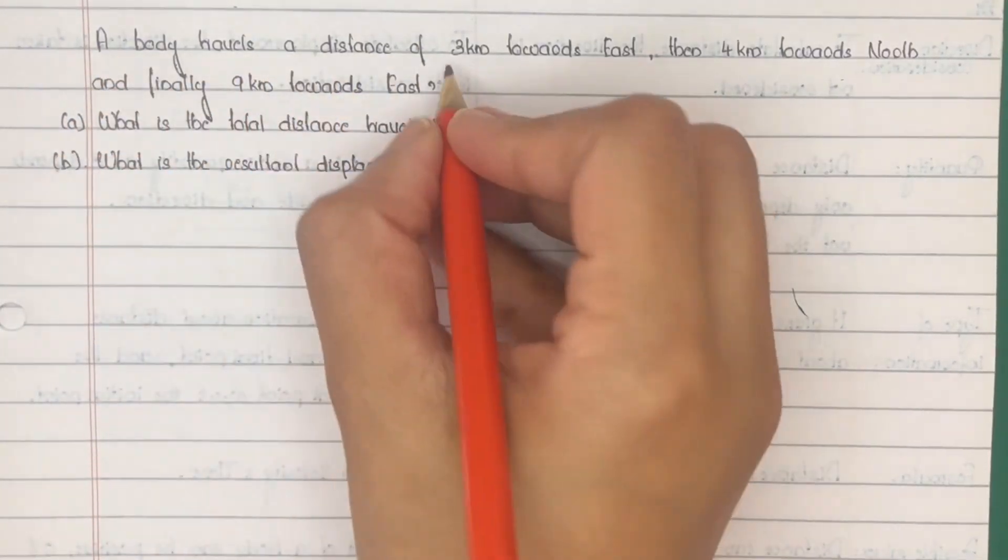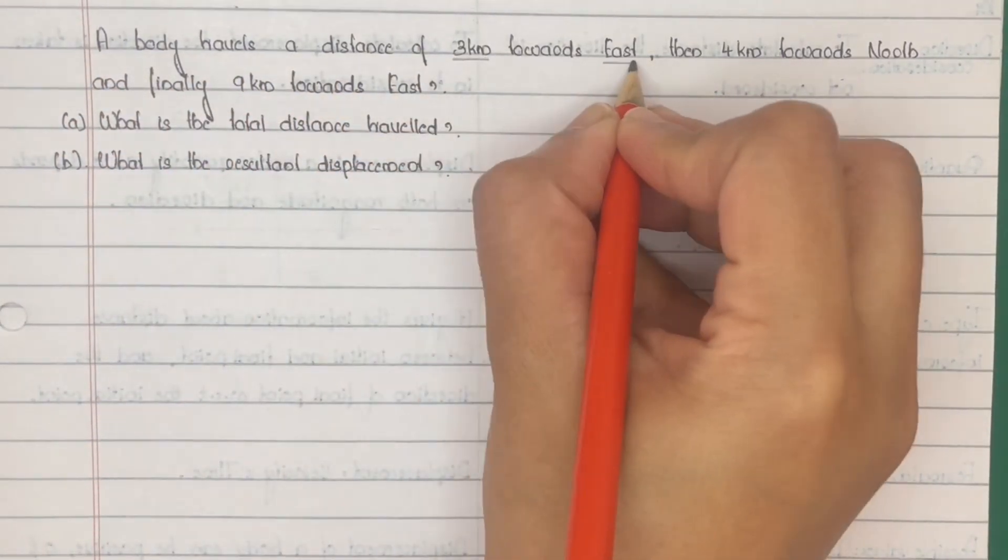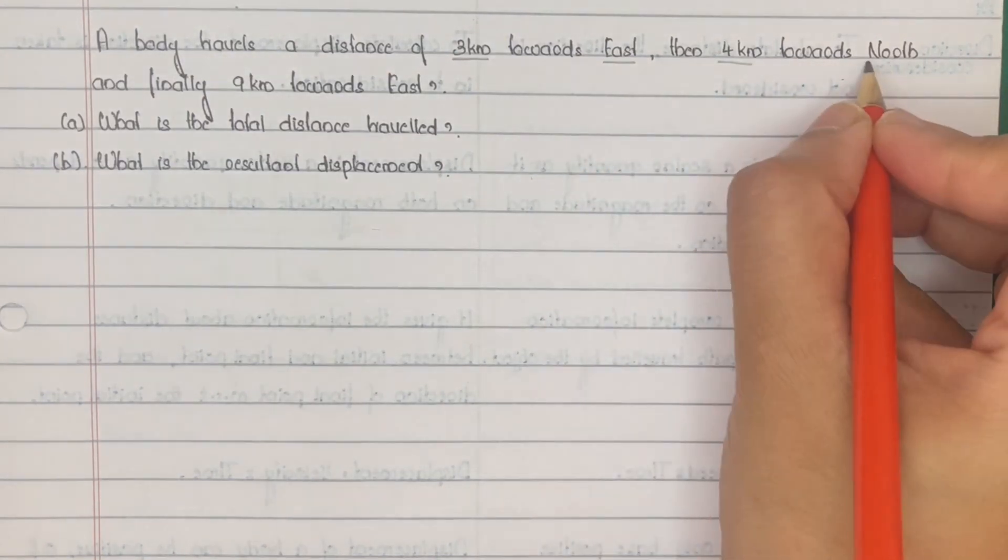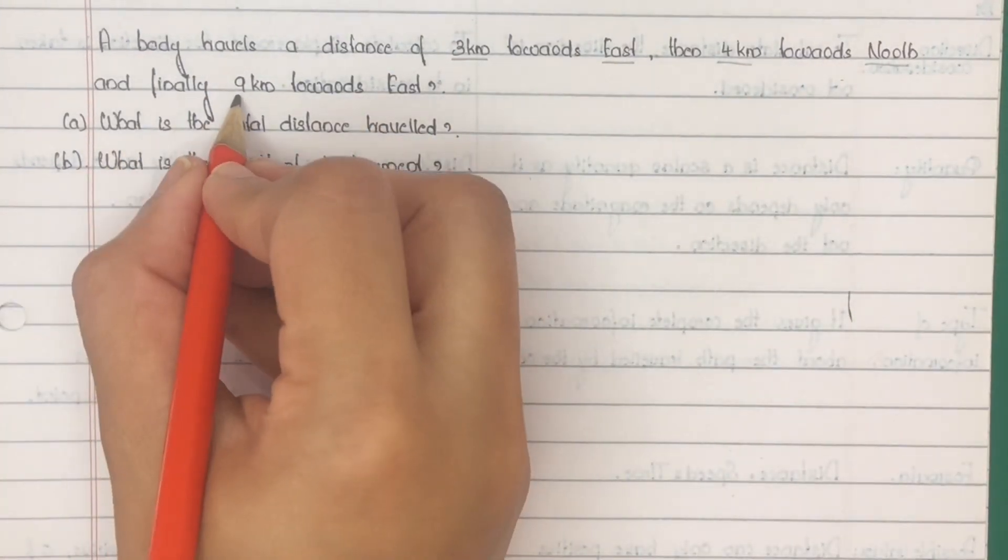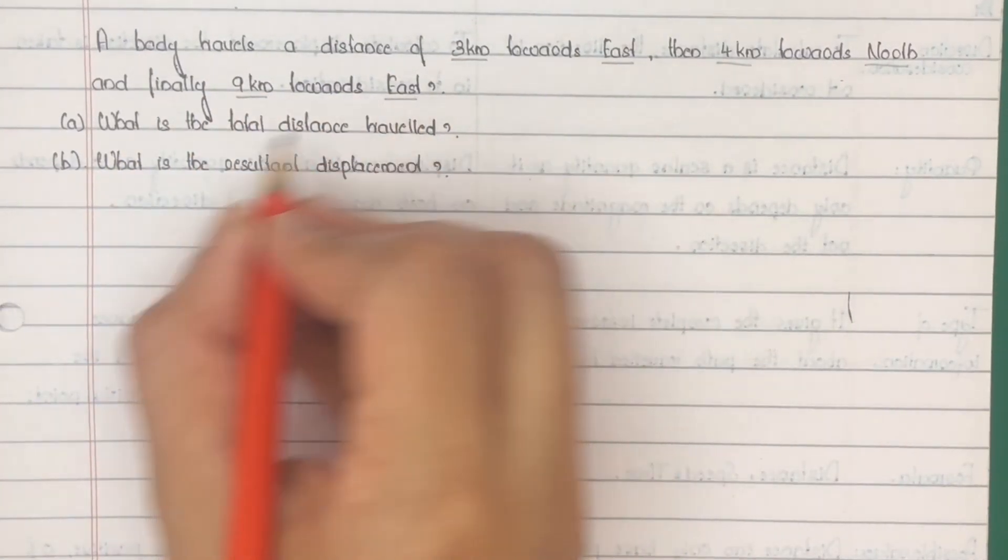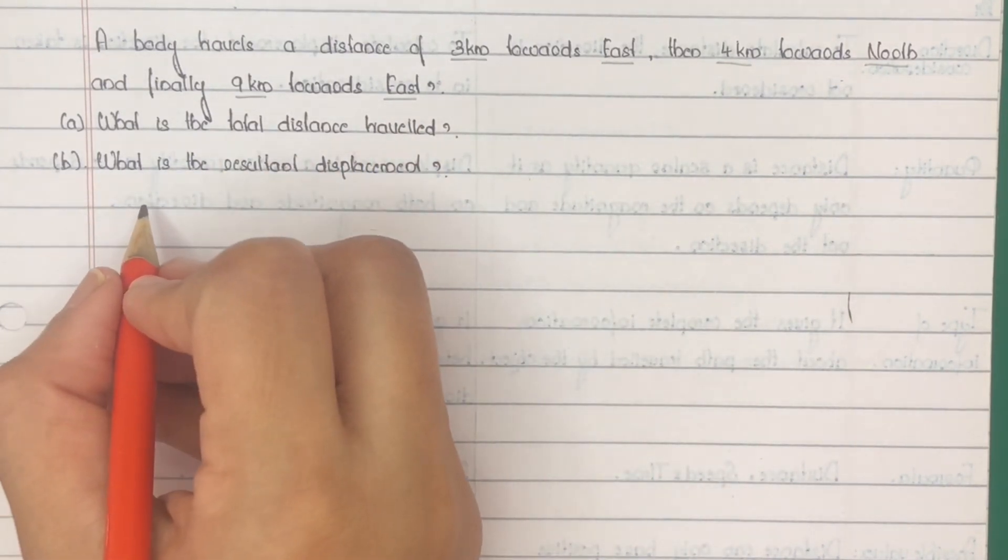A body travels a distance of 3 km towards east, then 4 km towards north and finally 9 km towards east. What is the total distance traveled and what is the resultant displacement?